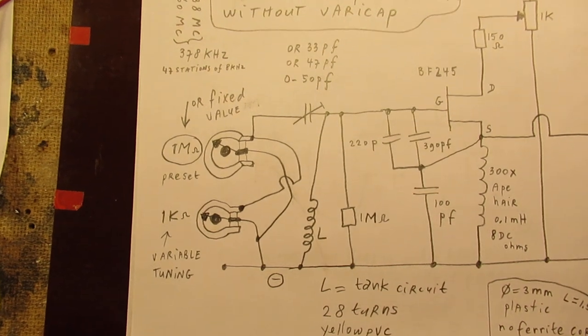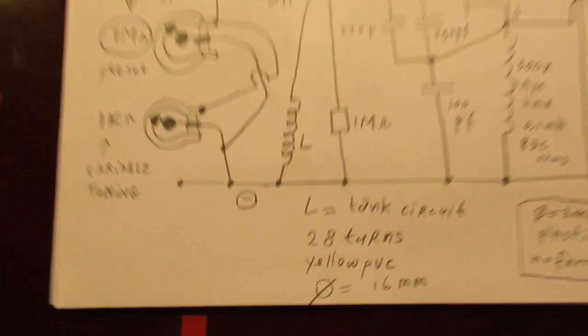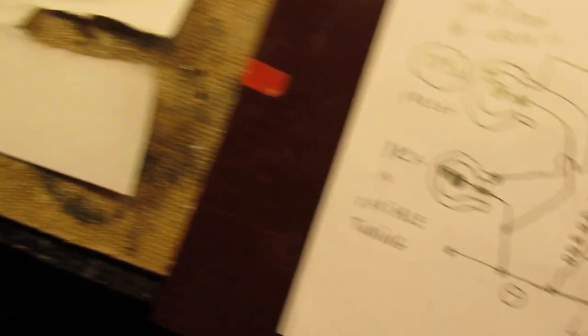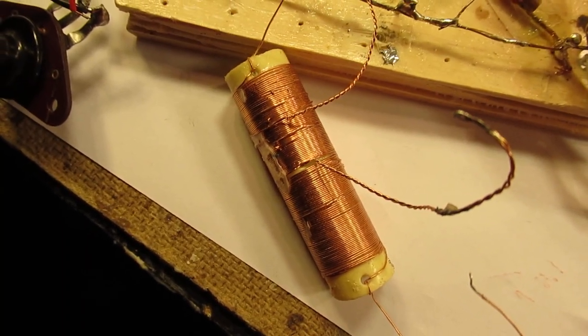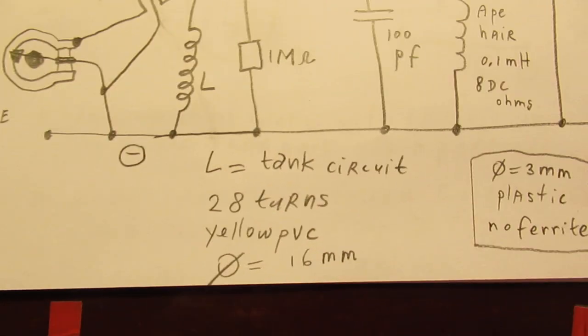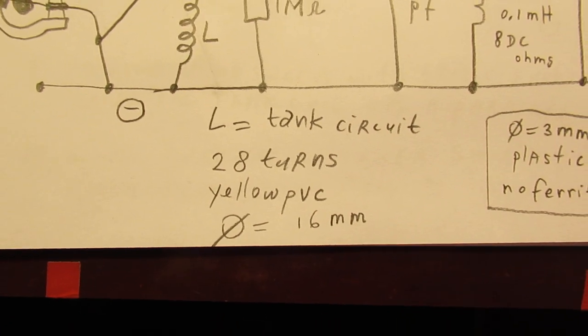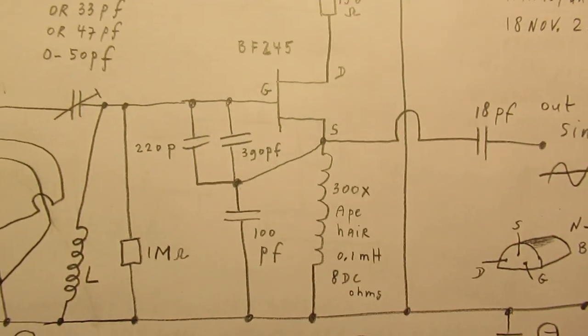I want to tell more about the principles as far as I can understand them. The tank circuit, 28 turns. This is my tank circuit. 28 turns on yellow PVC diameter, 16 millimeters. This is also important, the coil.